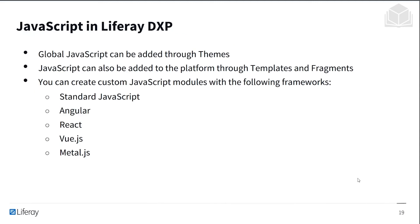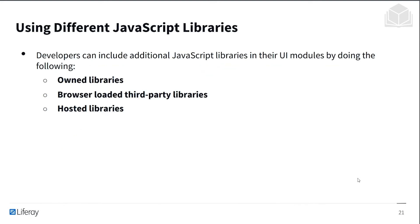JavaScript in Liferay DXP can be added through themes globally. It can also be added to the platform through templates and fragments, which we covered in the last section. You can also create custom JavaScript modules using standard JavaScript or frameworks like Angular, React, Vue.js, or Metal.js. Developers can include their own additional libraries in their UI modules using own libraries, browser-loaded third-party libraries, or even hosted libraries. There's a lot of flexibility for JavaScript within modules.